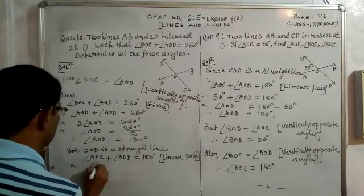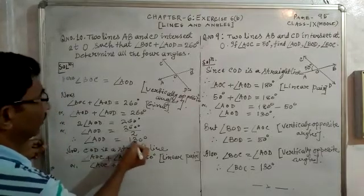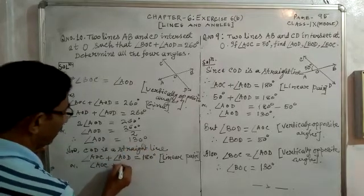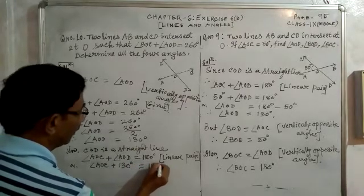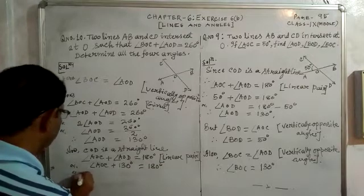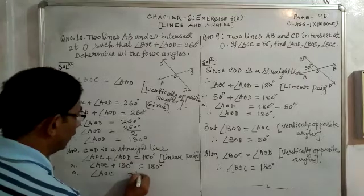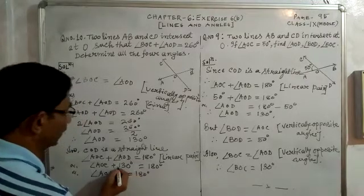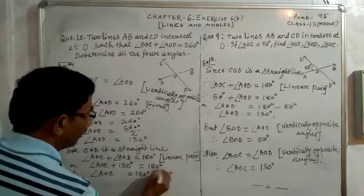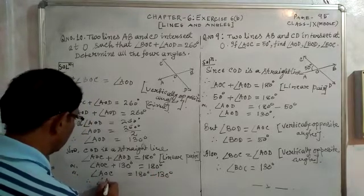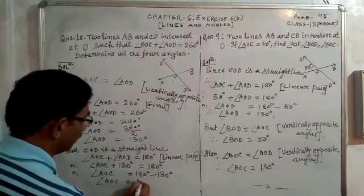Angle AOC plus 130 degrees is equal to 180 degrees. Taking 130 from left to right, angle AOC equals 180 minus 130, therefore angle AOC is equal to 50 degrees. So we have angle AOD equal to 130 degrees and angle AOC equal to 50 degrees.